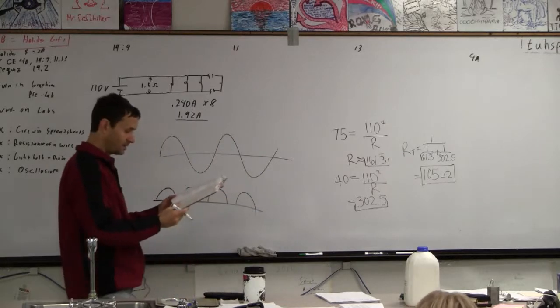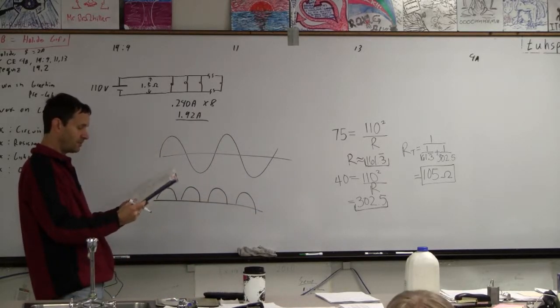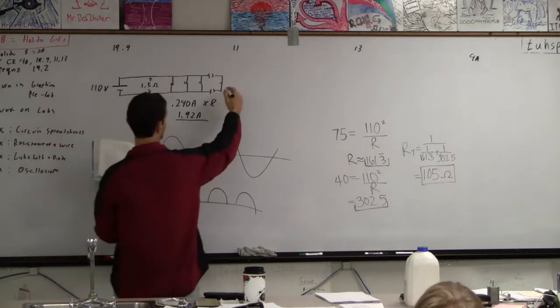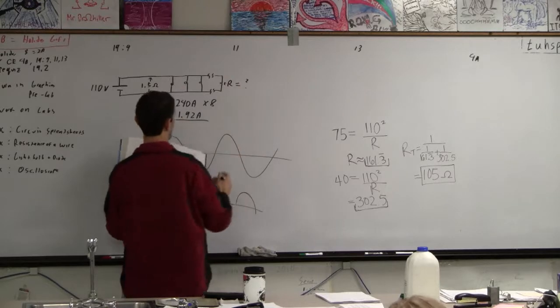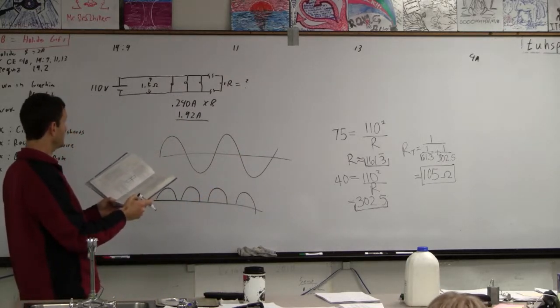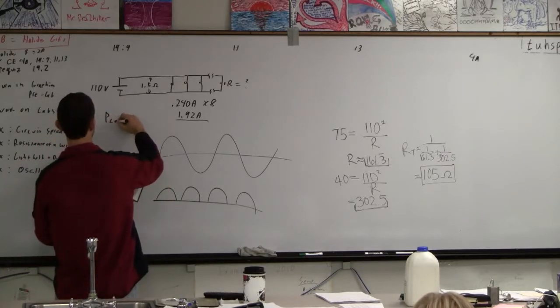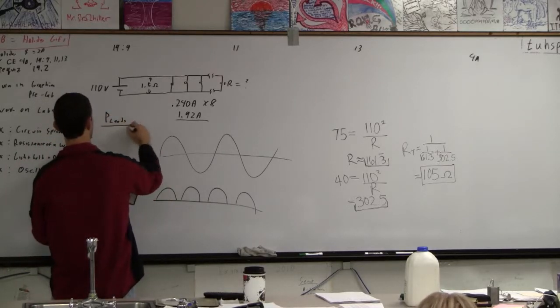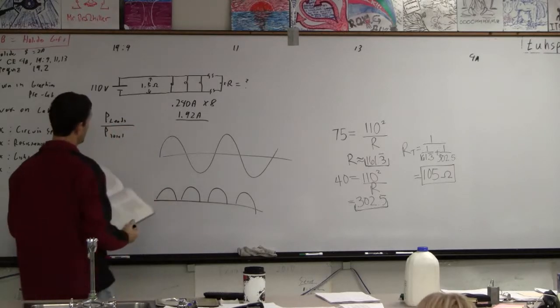And then it says, I think our question is what is the resistance of each bulb? So what is the resistance of these guys? And then the question is what fraction of the total power is wasted in the leads? So power in the leads divided by the total power, right?